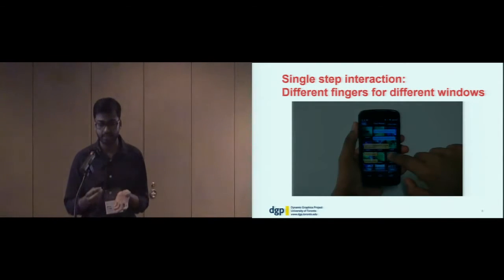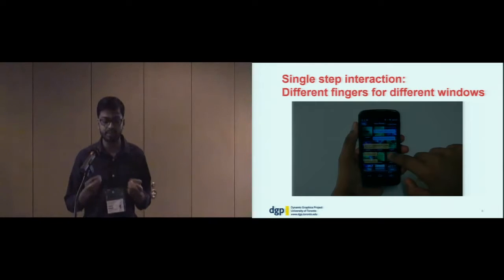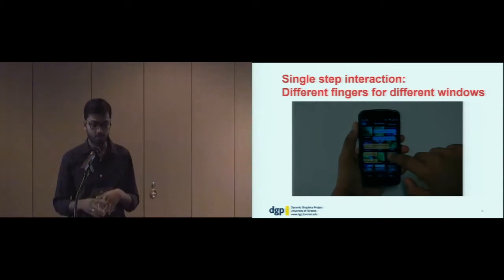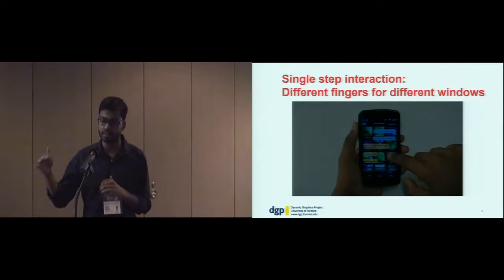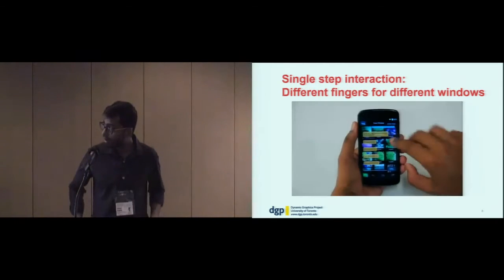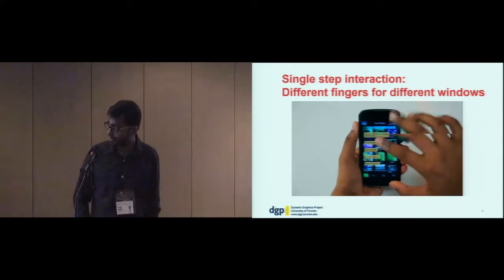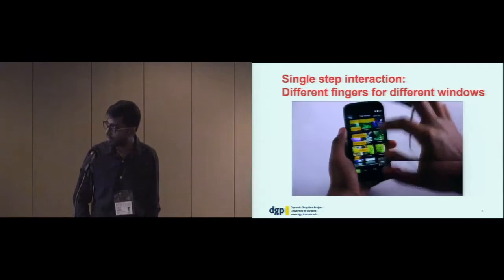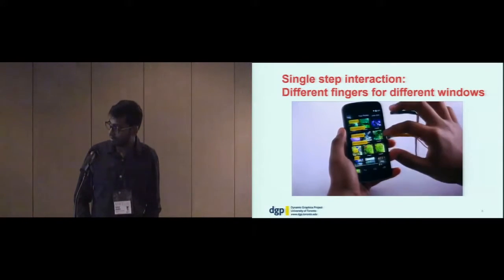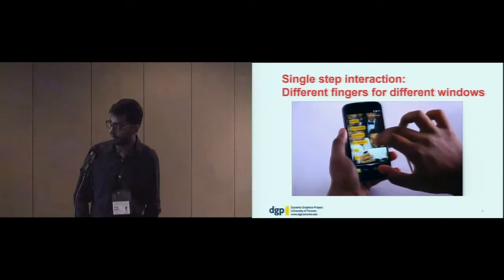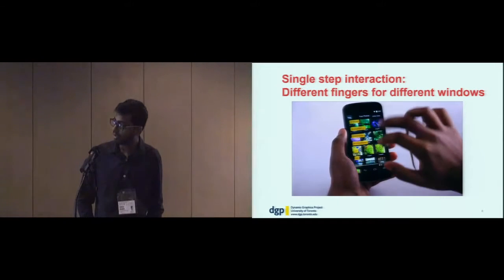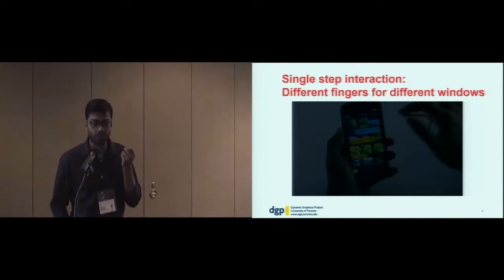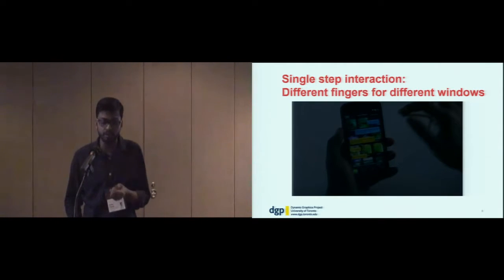After concurrent visibility, the next step is to enable single-step interaction for both apps. To do that, we use different fingers for different windows. The index finger controls the messaging app on top, and the middle finger controls the photo app. The index finger scrolls the top app, and the middle finger scrolls the bottom app. You can also type in the chat application, and then zoom in using the middle finger in the photo app. So we support not only single-finger interaction but also multi-finger interactions like zooming.